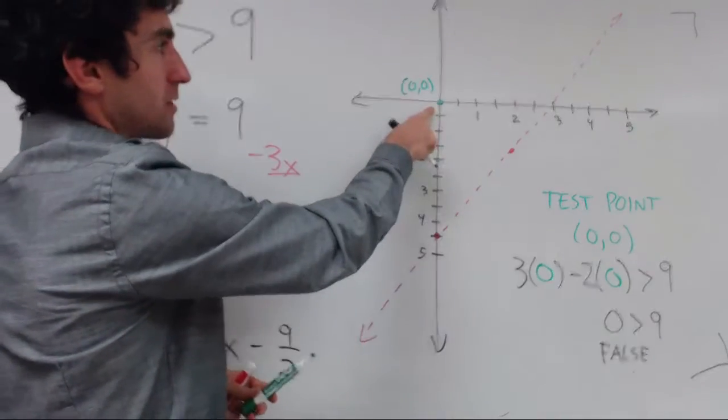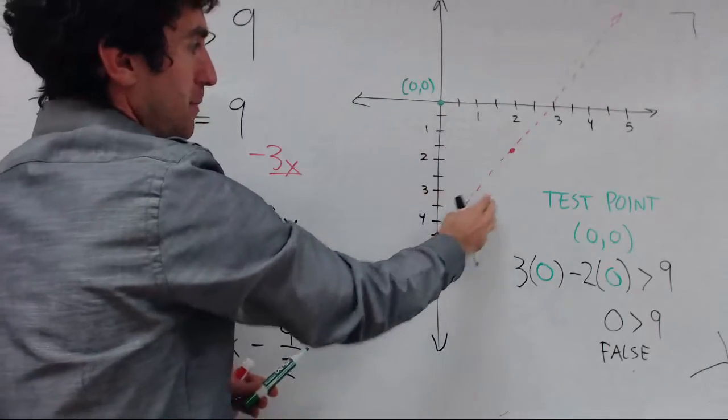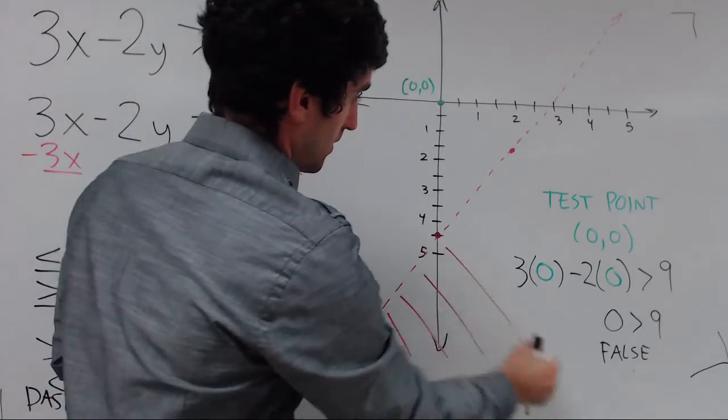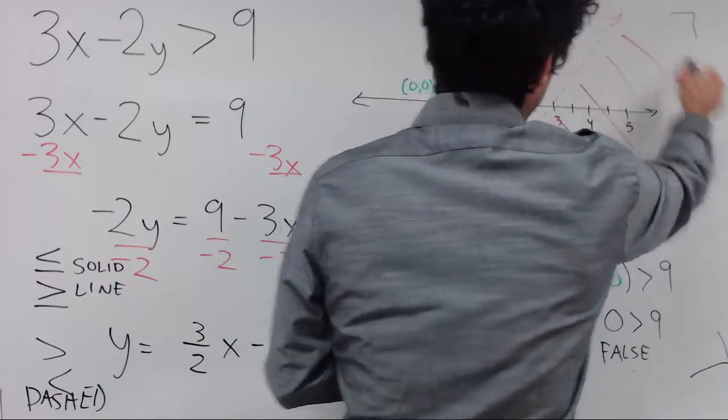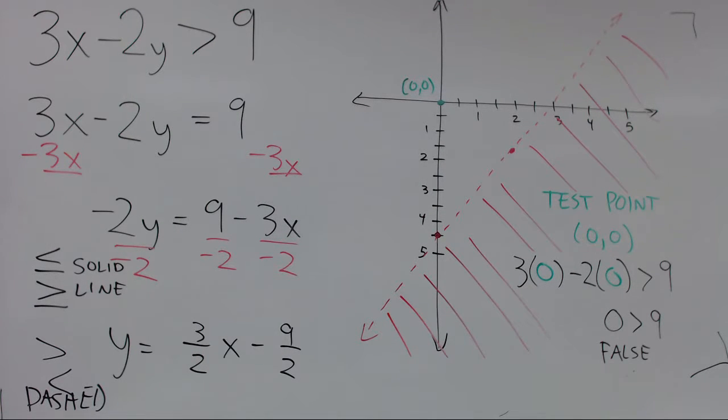So since zero zero is not a solution, none of these points on this side are solutions. And that means it has to be the other side. Depending on how you're doing this, you can shade or imply the shading of that whole other side. So everything down and to the right of that line would be a solution.